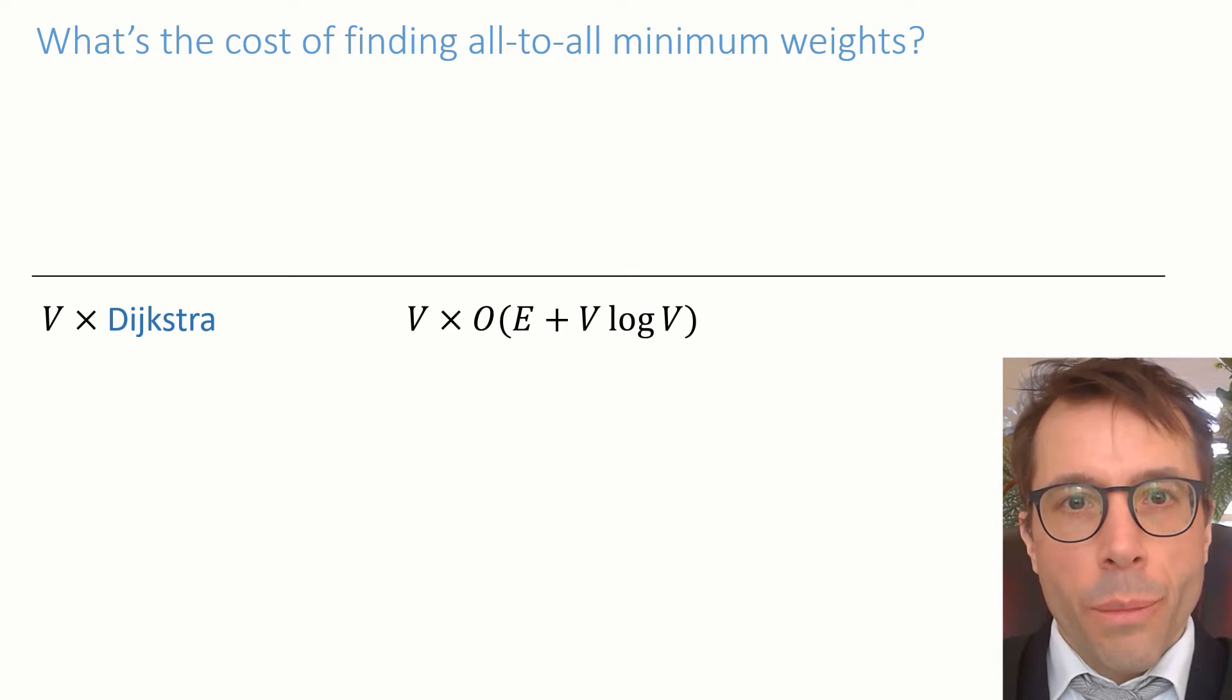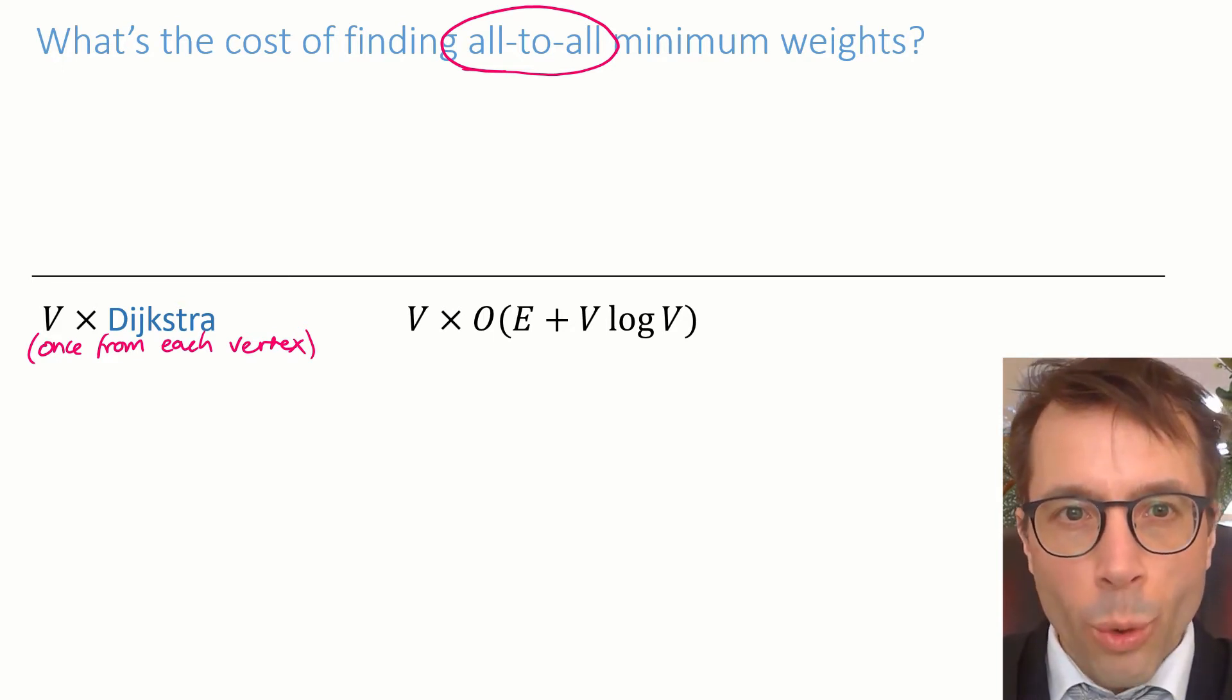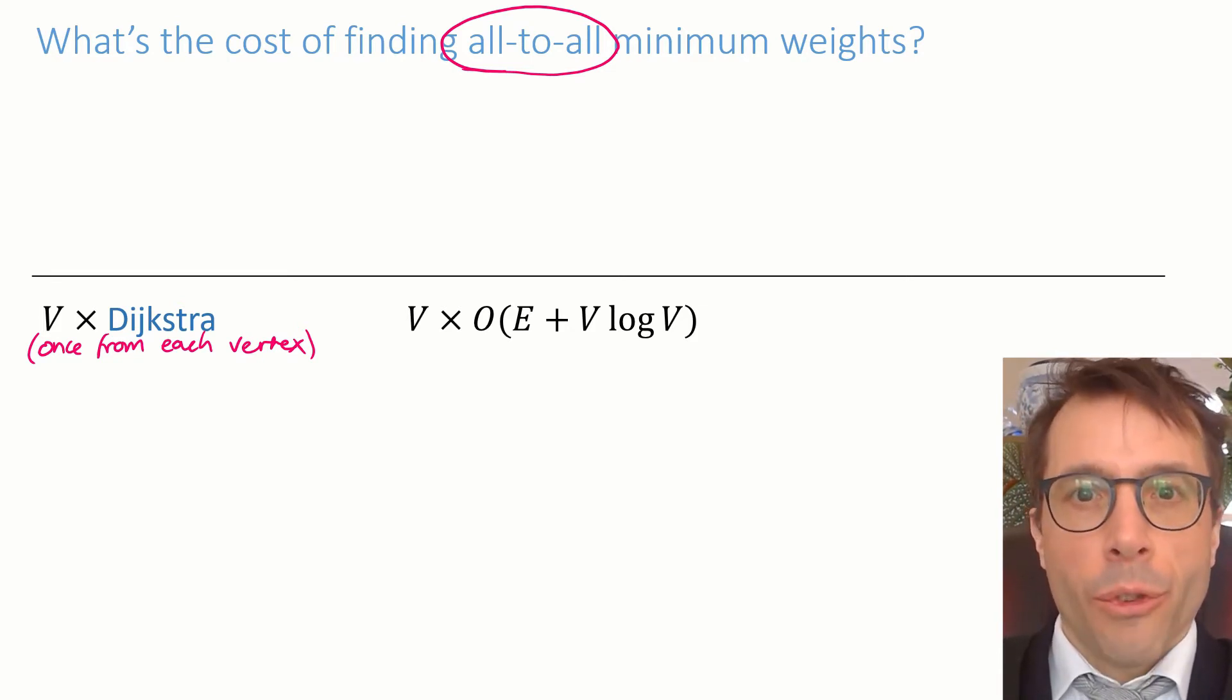The first thing that comes to mind is to run Dijkstra's algorithm. We'd run it V times, once from each vertex. Each time you run it you get the distances from a particular vertex to all the other vertices, so running it once from each vertex will give us all-to-all distances. And the total cost is V times the cost of a single run, V times big O of E plus V log V.